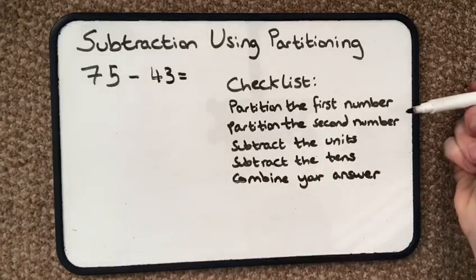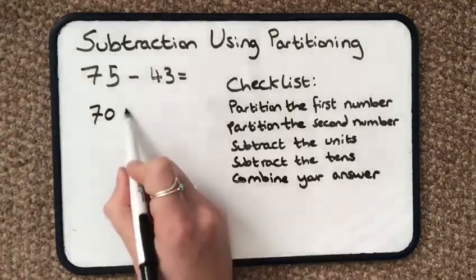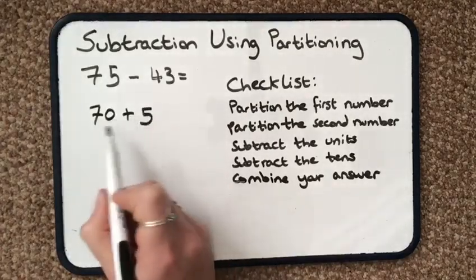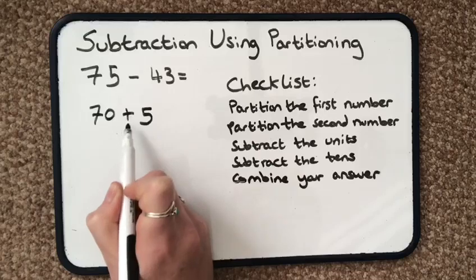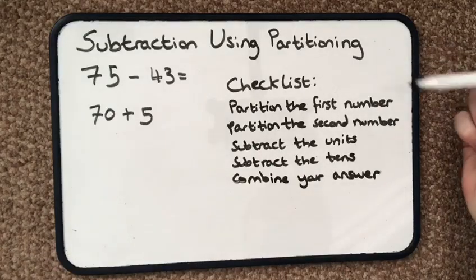So it says partition the first number to begin with, so 70 and 5. I'm not adding, it's just like an and sign for now. Don't get confused, we are still doing take away, subtraction.